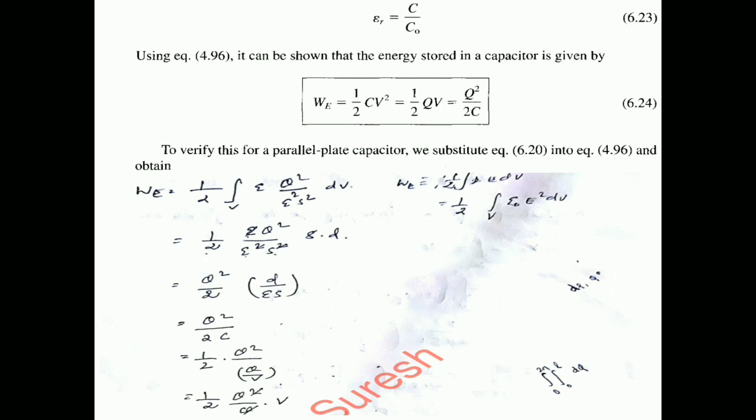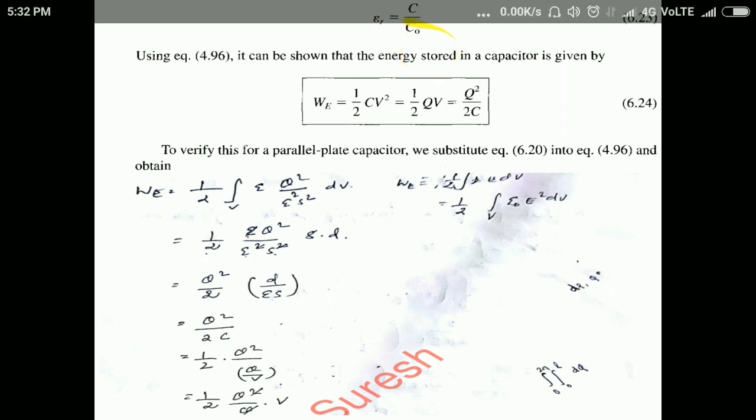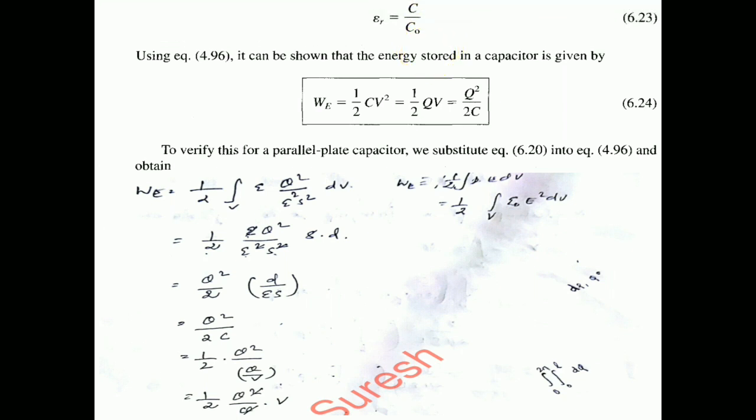If we want to find the relative permittivity epsilon_r of a particular dielectric material, and we know the capacitance value with that material and then replace it with free space and know that capacitance value too, we can calculate epsilon_r. The energy stored in a capacitor is already known: W_E equals one-half C V squared.